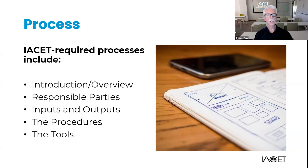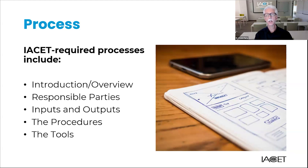For example, a process on how you analyze your learning events for effectiveness and ongoing improvement: the inputs might be the course evaluation summary results stored in your LMS, and an output might be a report that is emailed or shared with instructors and other stakeholders. Then we have the procedures — the sequence of activities that make up the process, the actual step-by-step instructions provided to an employee to be able to complete the process. Finally, the tools: these are the tools used to complete the process — things like checklists, templates, other forms, or perhaps even an LMS. If a process utilizes such a tool, a blank copy of that tool should be included at the end of the process document, often as an appendix.